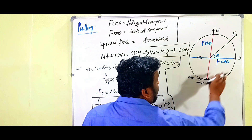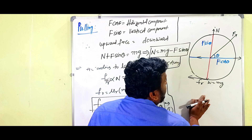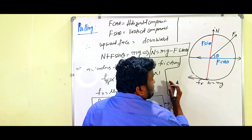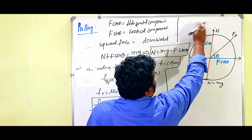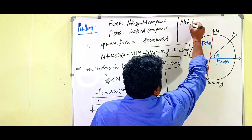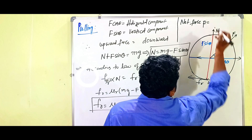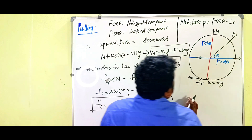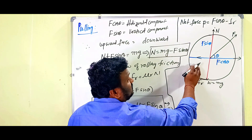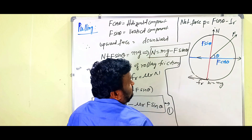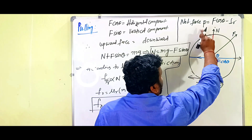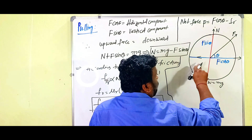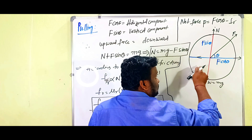When the roller is moving in the horizontal direction, the net force equation can be written as: net force P equals F cos theta minus F_R. This is the net force acting on the roller in the rolling condition while pulling. So P equals F cos theta minus F_R.